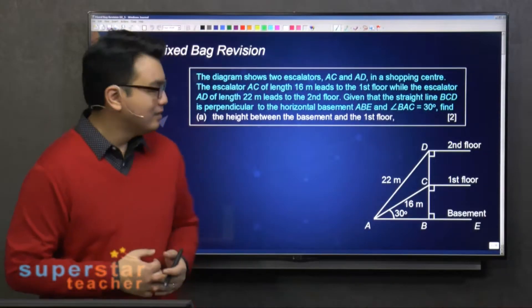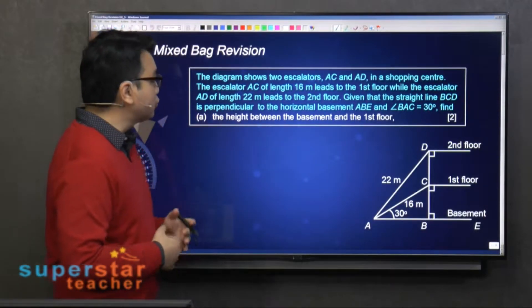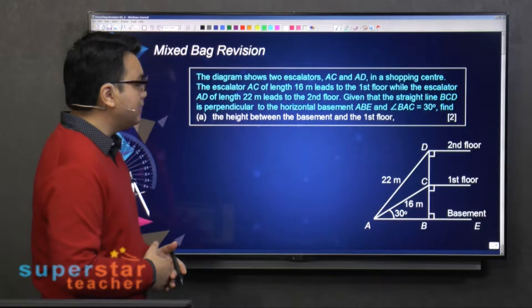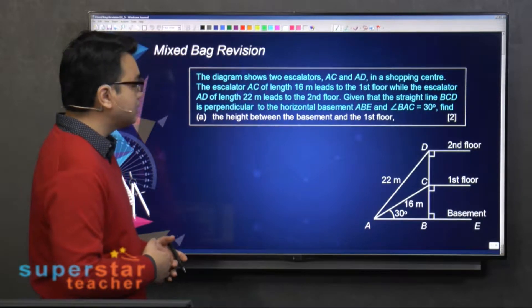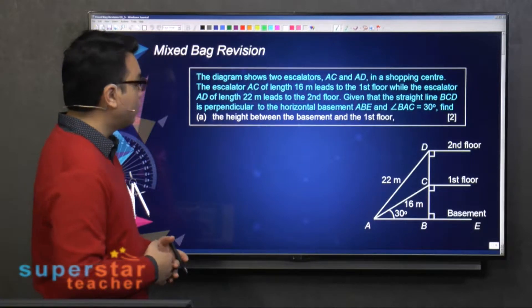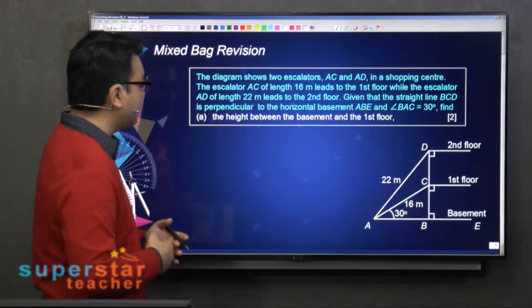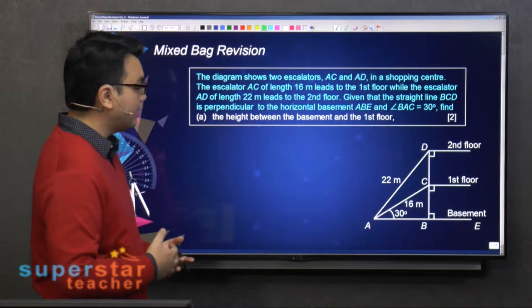Welcome back. The diagram shows two escalators AC and AD in a shopping center. The escalator AC of length 16 meters leads to the first floor, while the escalator AD of length 22 meters leads to the second floor.